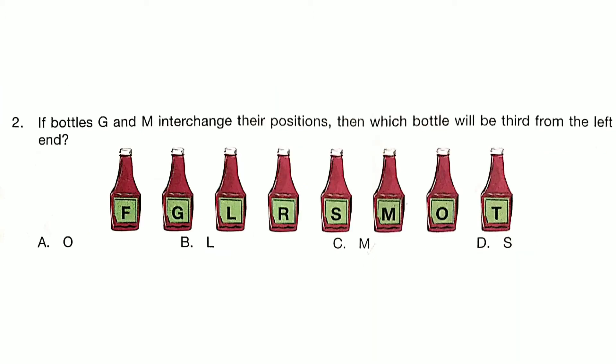If bottles G and M interchange their positions, then which bottle will be third from the left end? Answer is Option B.